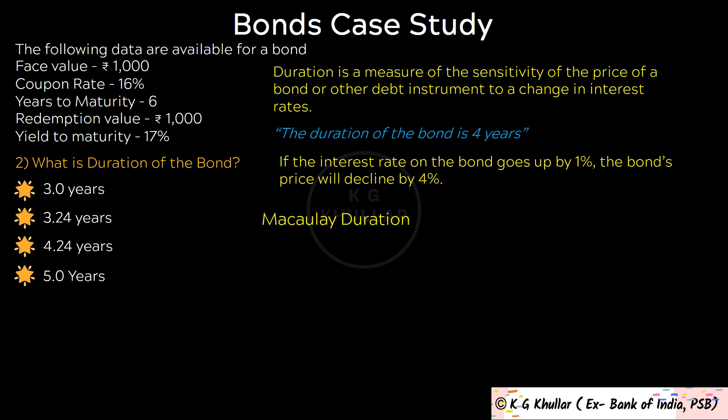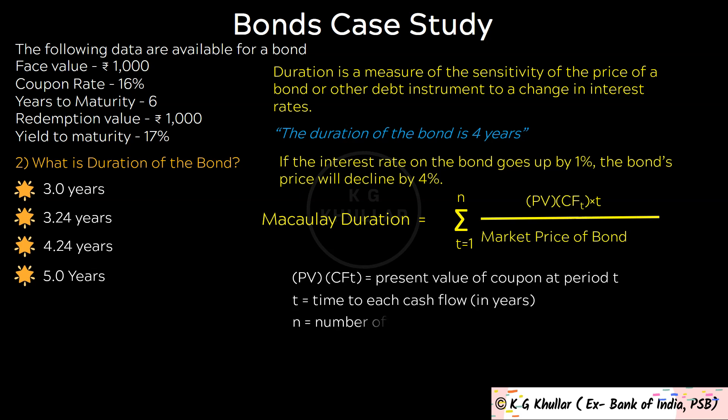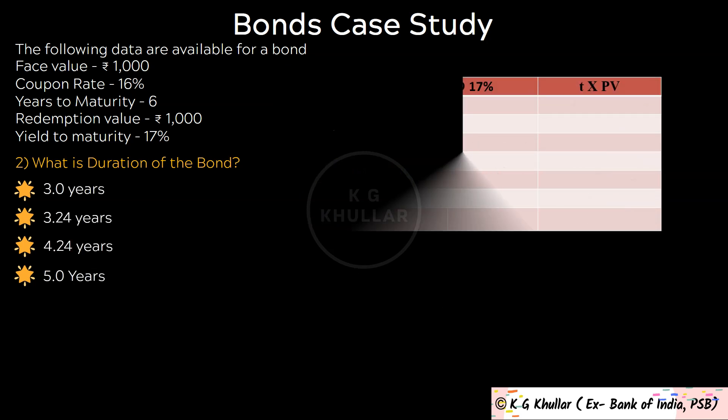The mathematical formula to find duration — Macaulay duration — equals the summation from t=1 to n of (present value of cash flow at time t, multiplied by t), divided by the market price of the bond. By default, when we are asked about duration of a bond, we normally mean Macaulay duration only. I will teach you the steps using which you can easily find the duration using a table.